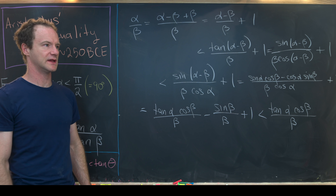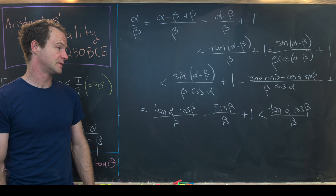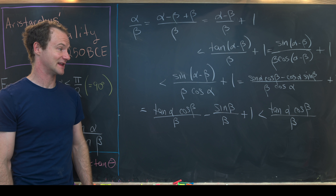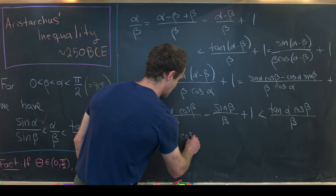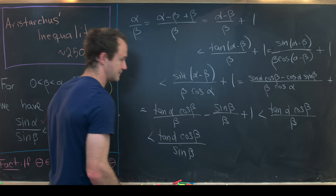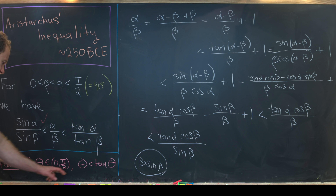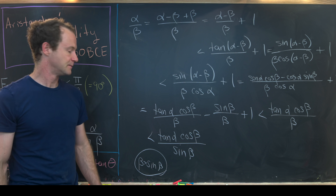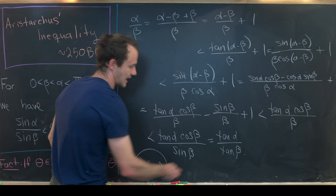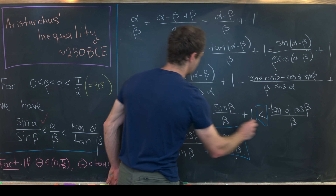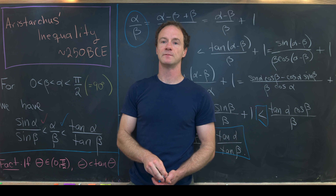Finally, we replace beta in the denominator with sine(beta). Since beta is greater than sine(beta), this makes the denominator smaller and the whole expression larger. So we get tan(alpha)·cosine(beta) over sine(beta), which simplifies to tan(alpha) over tan(beta). Comparing the far left and far right of our chain of inequalities, we've proven that alpha over beta is less than tan(alpha) over tan(beta), completing the proof.